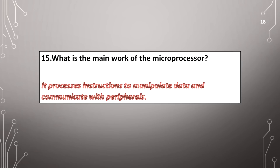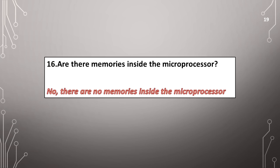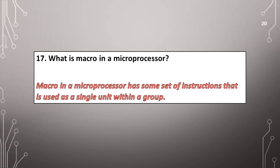What is the main work of the microprocessor? It processes instructions to manipulate data and communicate with peripherals. Are there memories inside the microprocessor? No, there are no memories inside the microprocessor. What is a macro in a microprocessor? A macro in a microprocessor has some set of instructions that is used as a single unit within a group.